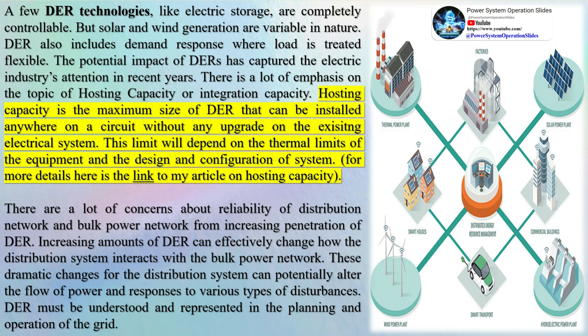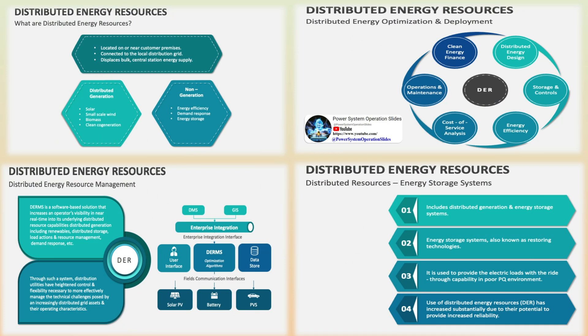DER, by virtue of being a resource in the distribution system, has a definite impact on the distribution system. However, there is also much discussion about the potential impact of DER penetration on the bulk power system — the term used to describe the generation and transmission system together. One of the key areas being researched is the potential impact of DER on the ability of the power system to perform its basic function: supply power without interruptions.